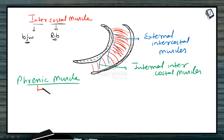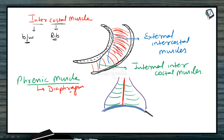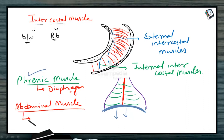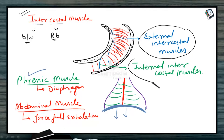The second muscle is the phrenic muscle — the muscle of the diaphragm. In a rough diagram of the ribcage from the front, we have the sternum, ribs, and the diaphragm. The diaphragm is curved, and when it moves downward by contraction of the phrenic muscle, the volume of the ribcage increases, which helps in inhalation. The third muscle is the abdominal muscle, which usually helps during forceful exhalation. All these muscles collectively help in normal inhalation, normal exhalation, and forceful exhalation.